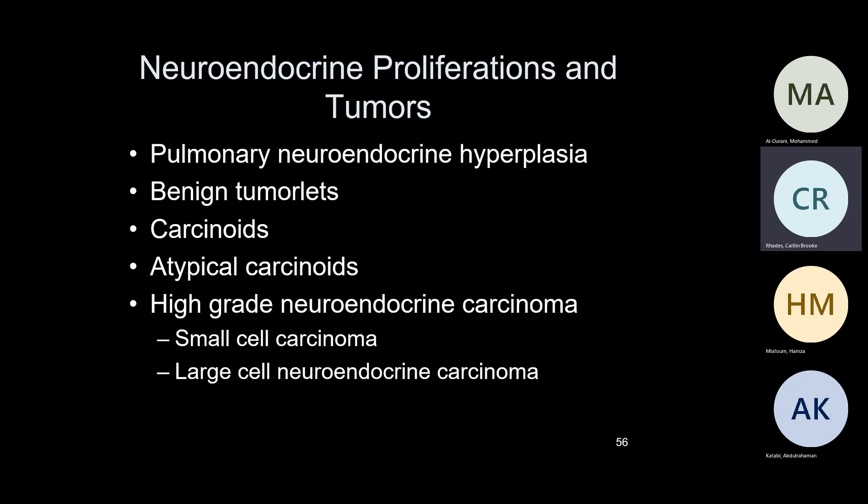Pulmonary neuroendocrine cell hyperplasia — you see that quite often. Size is important: remember 5 millimeters applies to three things: tumorlets are less than 5 mm, adenocarcinoma in situ versus atypical adenomatous hyperplasia is 5 mm, and minimally invasive is 5 mm. You can have benign tumorlets — small tumorlets less than 5 mm — carcinoid tumors, atypical carcinoid tumors, and high-grade neuroendocrine carcinomas. The low-grade would be carcinoid tumors; the high-grade would be large cell neuroendocrine carcinoma or small cell carcinoma.